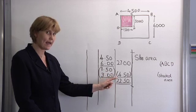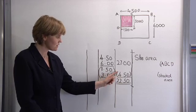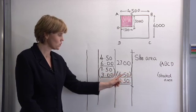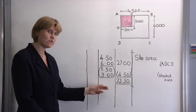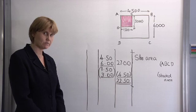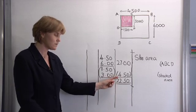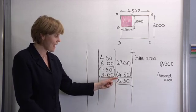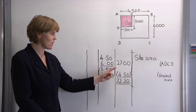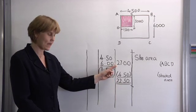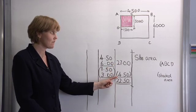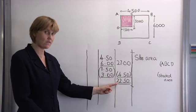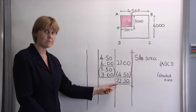Note that when we square the squared total also has brackets. Now let's work out our total site area. So as before we add up everything above the line. So we have 27 metres squared less 4.5 metres giving us a site area of 22.5 metres squared.